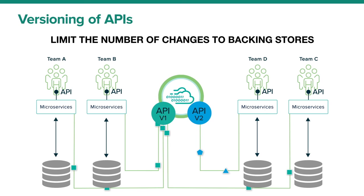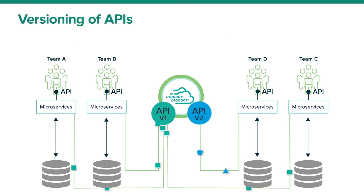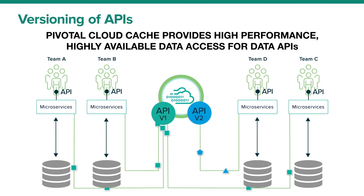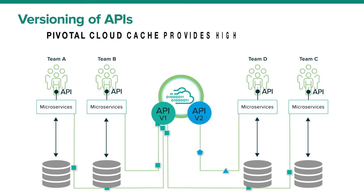Adding Pivotal Cloud Cache to a data API achieves some key benefits. PCC's in-memory, horizontally scalable architecture means that low-latency, high-throughput, highly available data access is now available to all the consuming microservices.